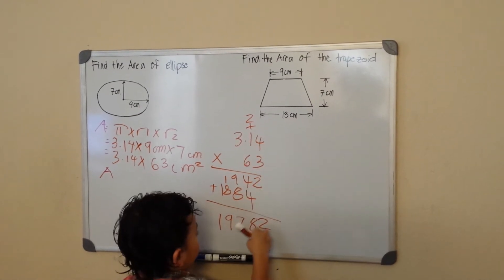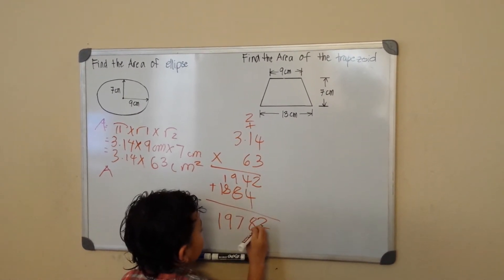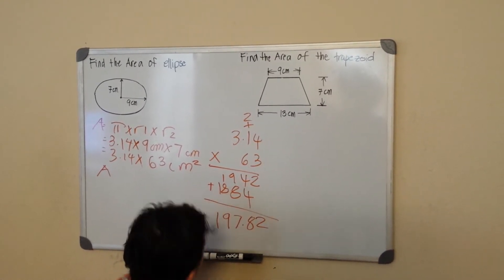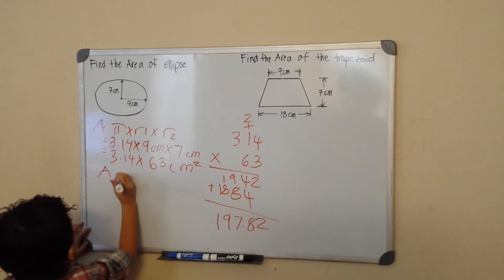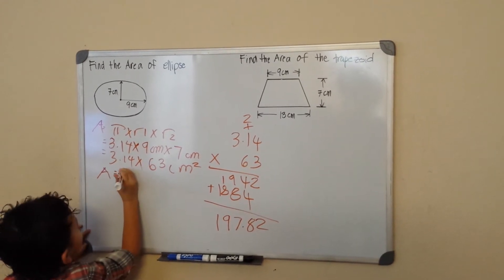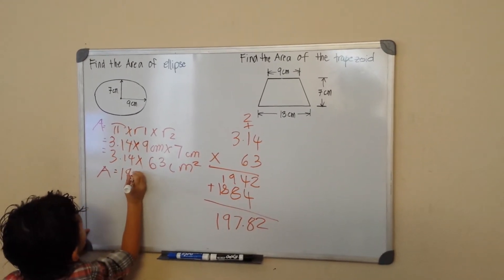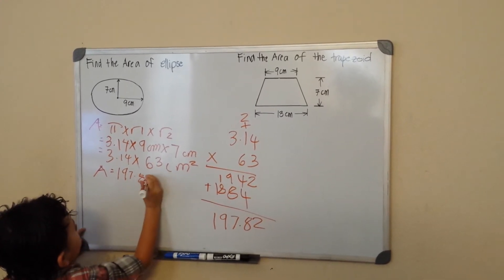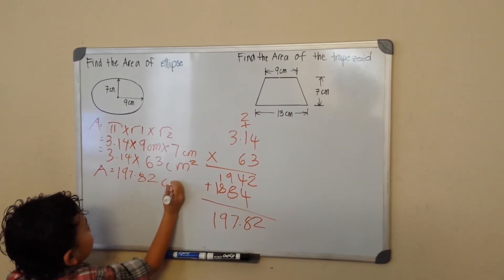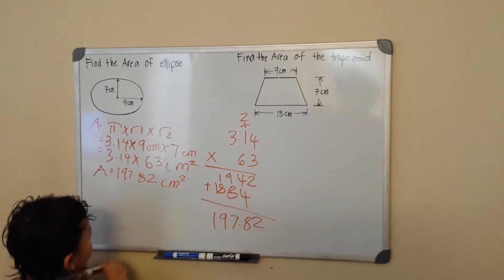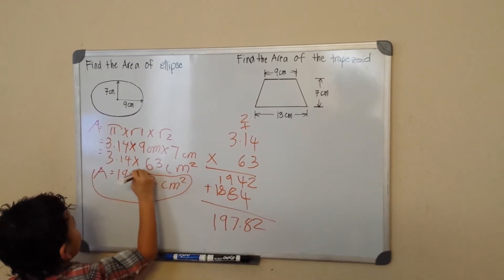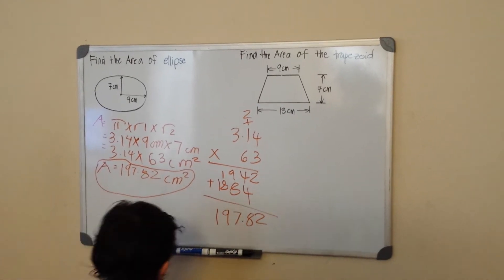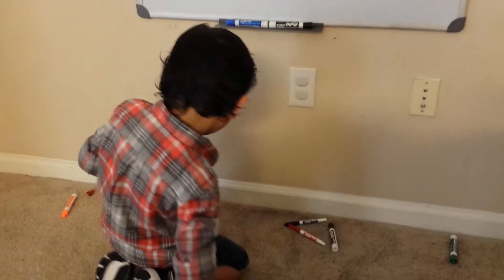So counting through the result and placing the decimal point, the area of the ellipse comes out to approximately 197.82 dm squared.